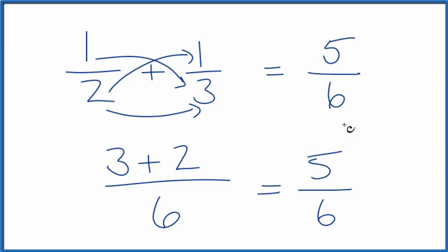That's the same answer we got before. So we had correctly added one-half plus one-third to get five-sixths. This is Dr. B adding the fractions one over two plus one over three. Thanks for watching.